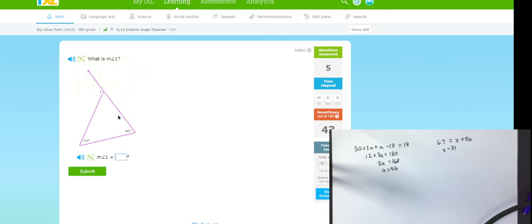These two are just going to be added because the external is equal to two not adjacent interior. So 53 plus 66 is 119. Just add them up. 90 plus 32 is 122.